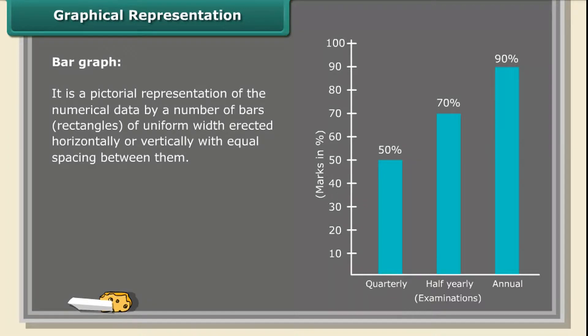The bar graph shows Divya's performance in the quarterly, half-yearly and annual examinations. It helps us to compare the whole year's performance. From the above graph, we infer that Divya's total marks has been increasing, which shows progress in her studies.